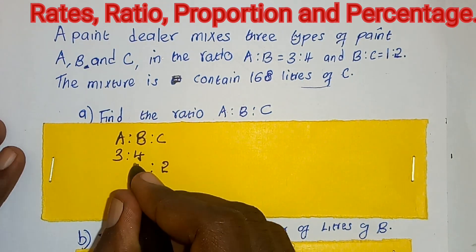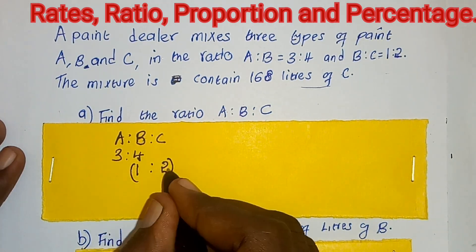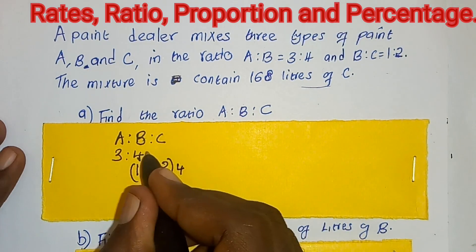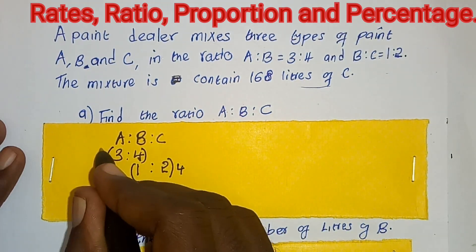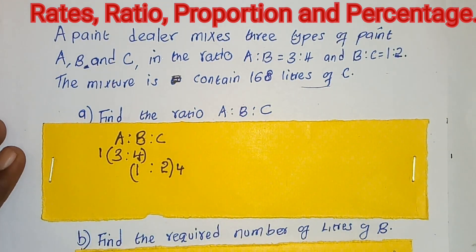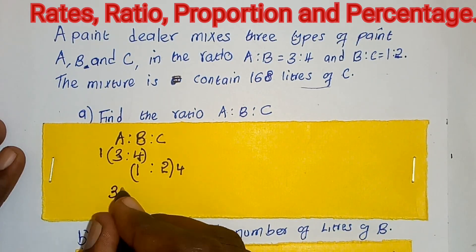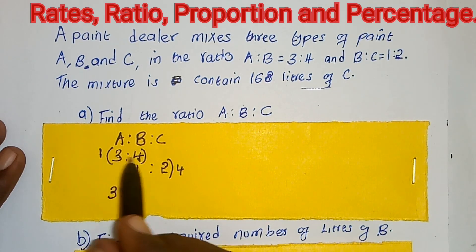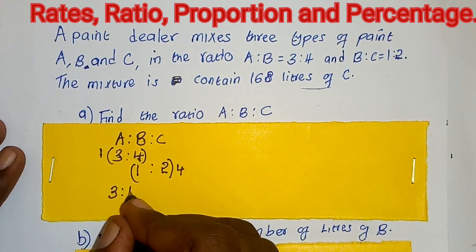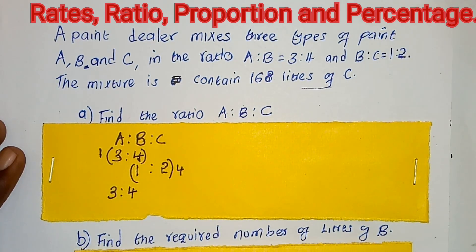We are going to multiply the lower part by 4, then the upper part we multiply by 1. If we say 1 times 3, we get 3 is to 1 times 4, we get 4.